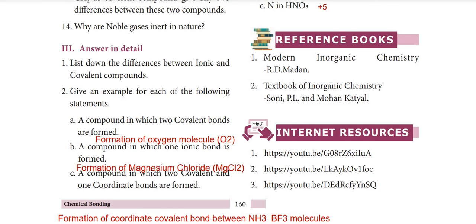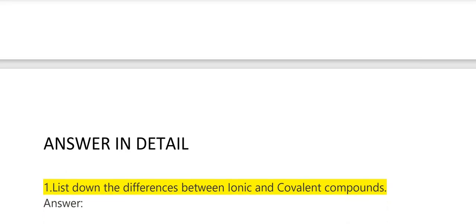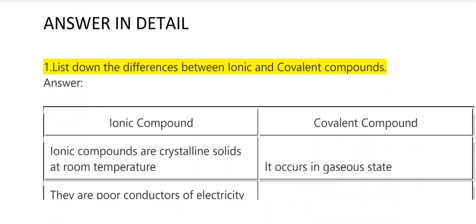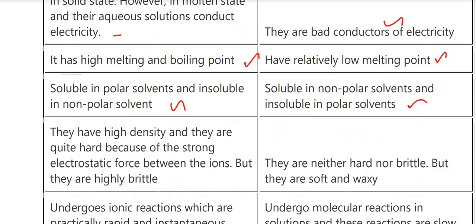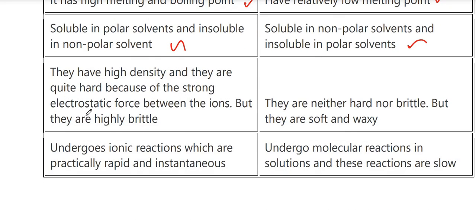Answer in detail. First question: list the differences between ionic and covalent compounds. Ionic compounds are crystalline solids at room temperature; covalent compounds occur in gaseous state. Ionic compounds are poor conductors in solid state but conduct electricity in molten state or aqueous solution; covalent compounds are bad conductors of electricity. Ionic compounds have high boiling and melting points; covalent compounds have relatively low melting points. Ionic compounds are soluble in polar solvents and insoluble in non-polar solvents; covalent compounds are soluble in non-polar solvents and insoluble in polar solvents. Ionic compounds have high density and are hard due to strong electrostatic forces but are highly brittle; covalent compounds are neither hard nor brittle but soft and waxy.